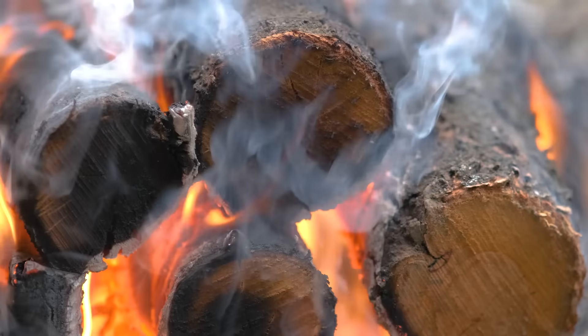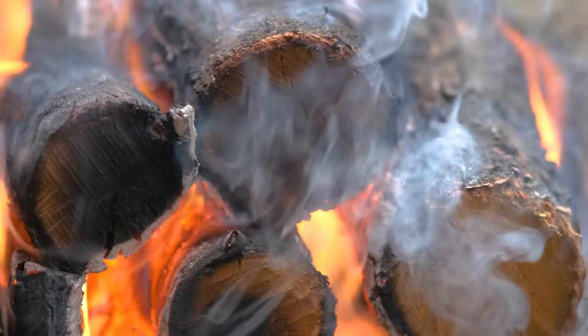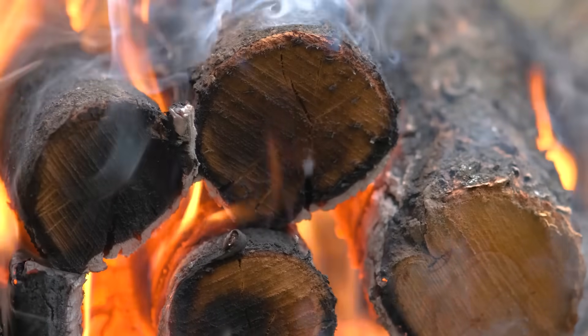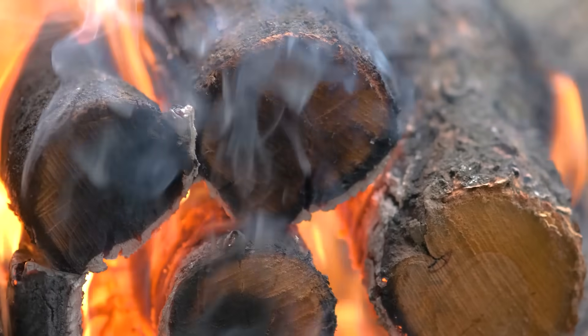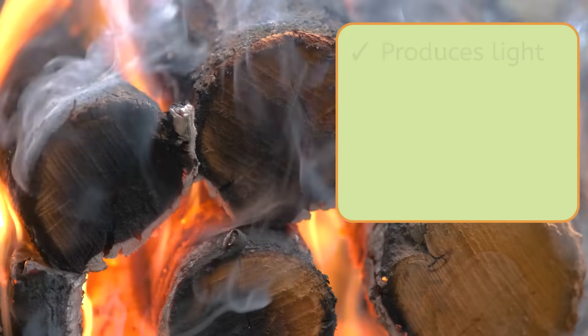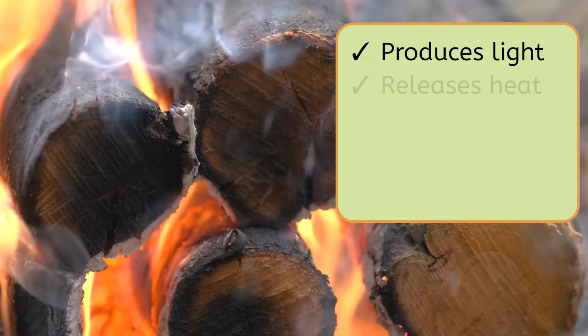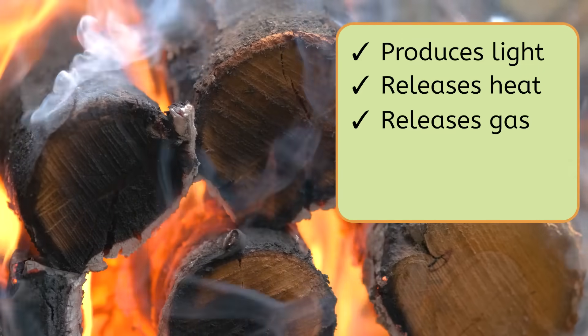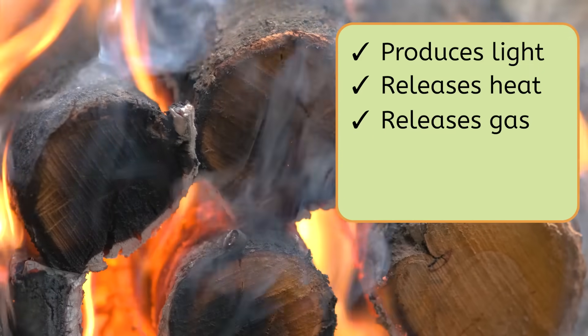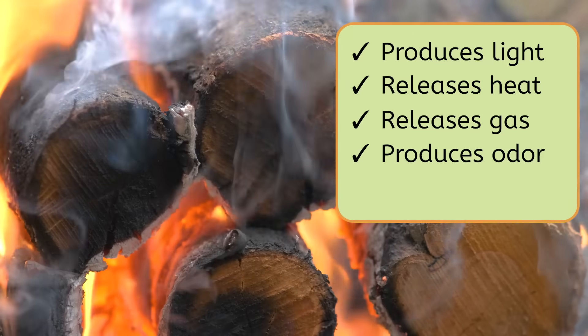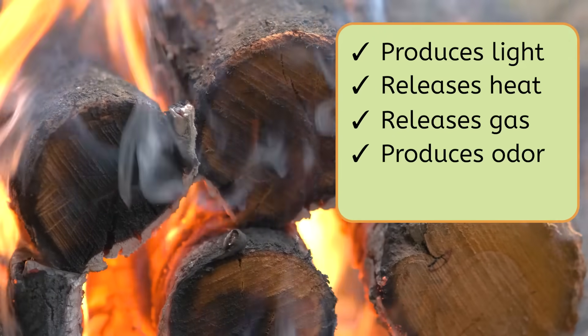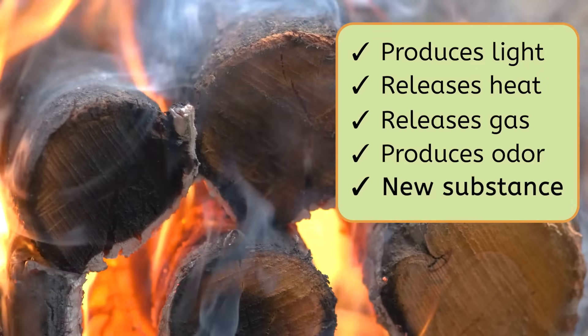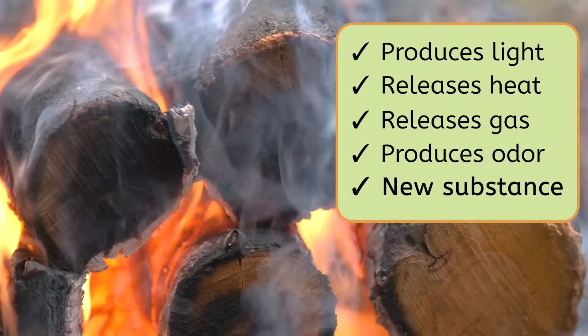Burning is a great example of a chemical change. Let's take a close look at these logs burning and look for the signs of a chemical change. As they burn, the logs emit light and heat. They are also releasing a gas in the form of smoke, and if you were standing next to them, you'd probably also notice a burning smell. All of these are signs of a chemical change. Most importantly, a new substance is being produced. Ash.